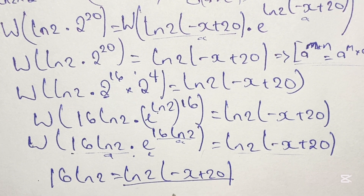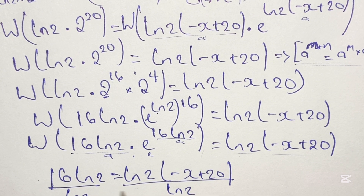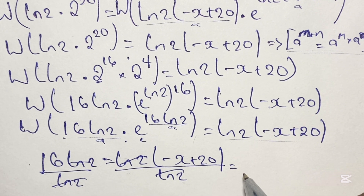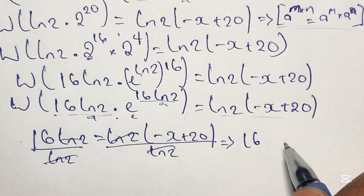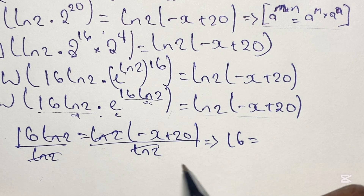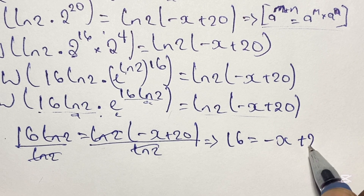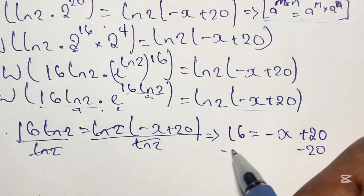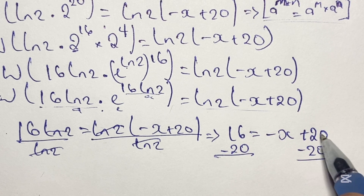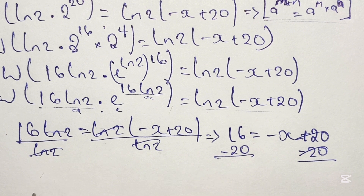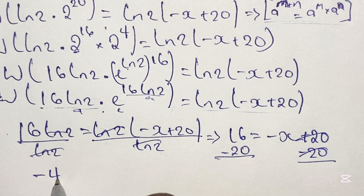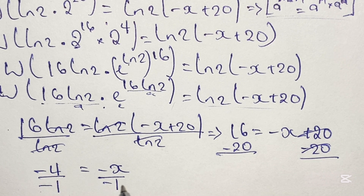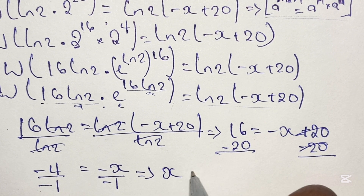From here we continue to solve for x by dividing both sides by ln 2, so ln 2 cancels on both sides. We are left with 16 equals negative x plus 20. Subtracting 20 from both sides gives us 16 minus 20 equals negative x, which is negative 4 equals negative x. Dividing both sides by negative 1, we get x equals 4.